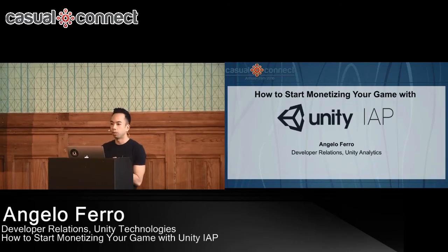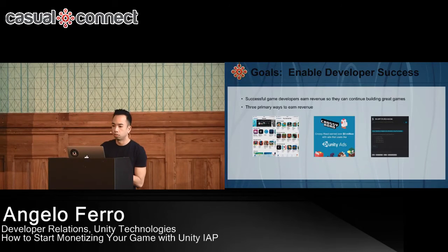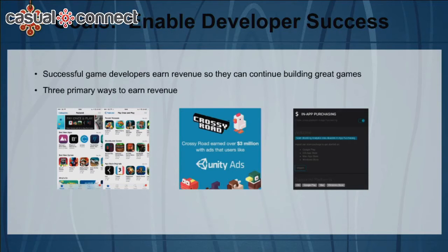So, why are we doing this? One of our goals at Unity is to enable developer success. If you're a successful developer, chances are you're earning revenue, and that means you can build more great games. If you're a mobile developer, there are three main ways to earn revenue: you can sell your game as a premium app, monetize with ads, or monetize with in-app purchases or IAP. This presentation focuses on the third part, which is IAP.